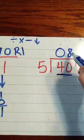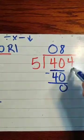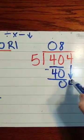Will 5 go into 40? Yes, 8 times. 5 times 8, 40. We subtract, we get 0, we bring down our 4.